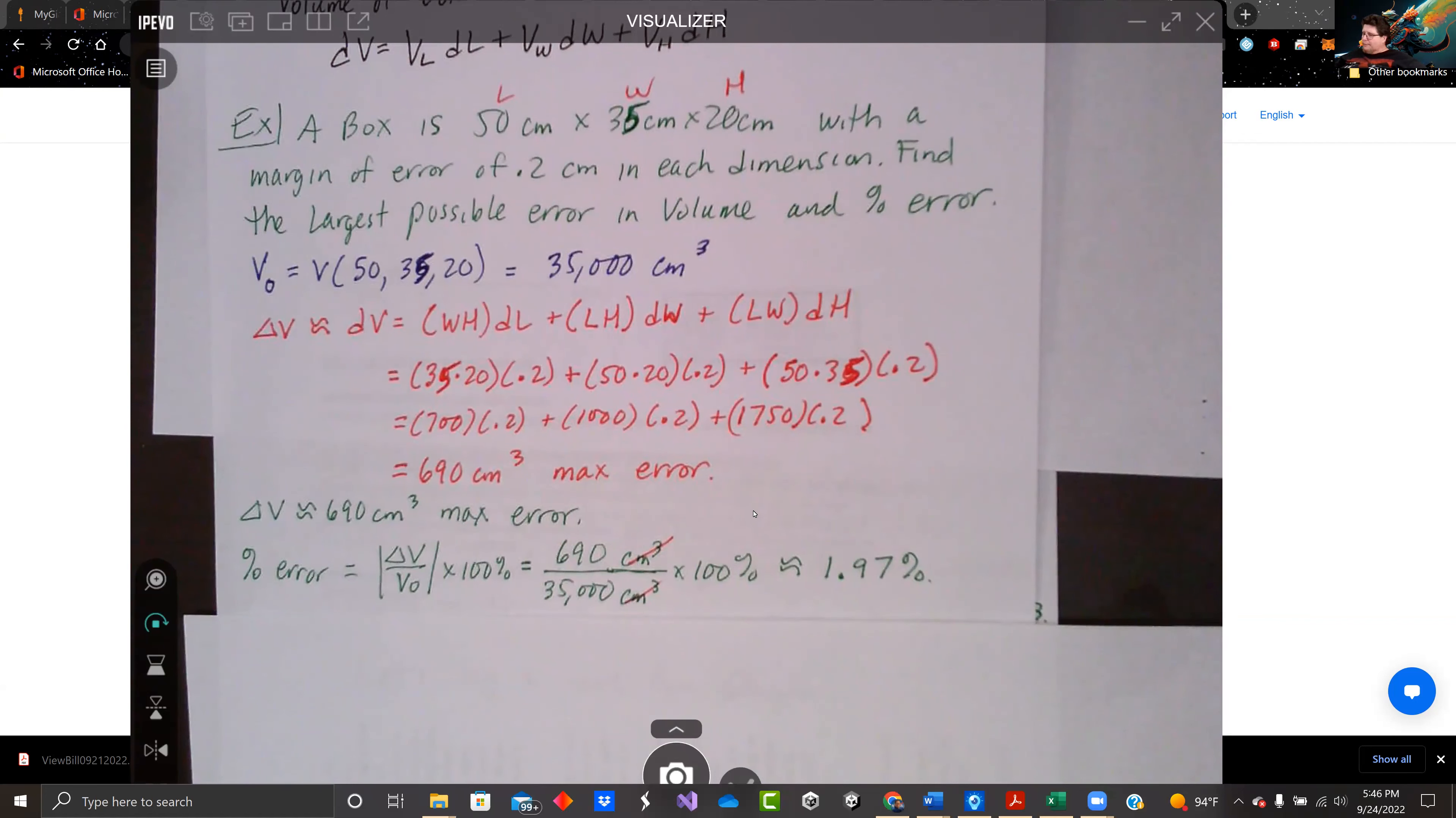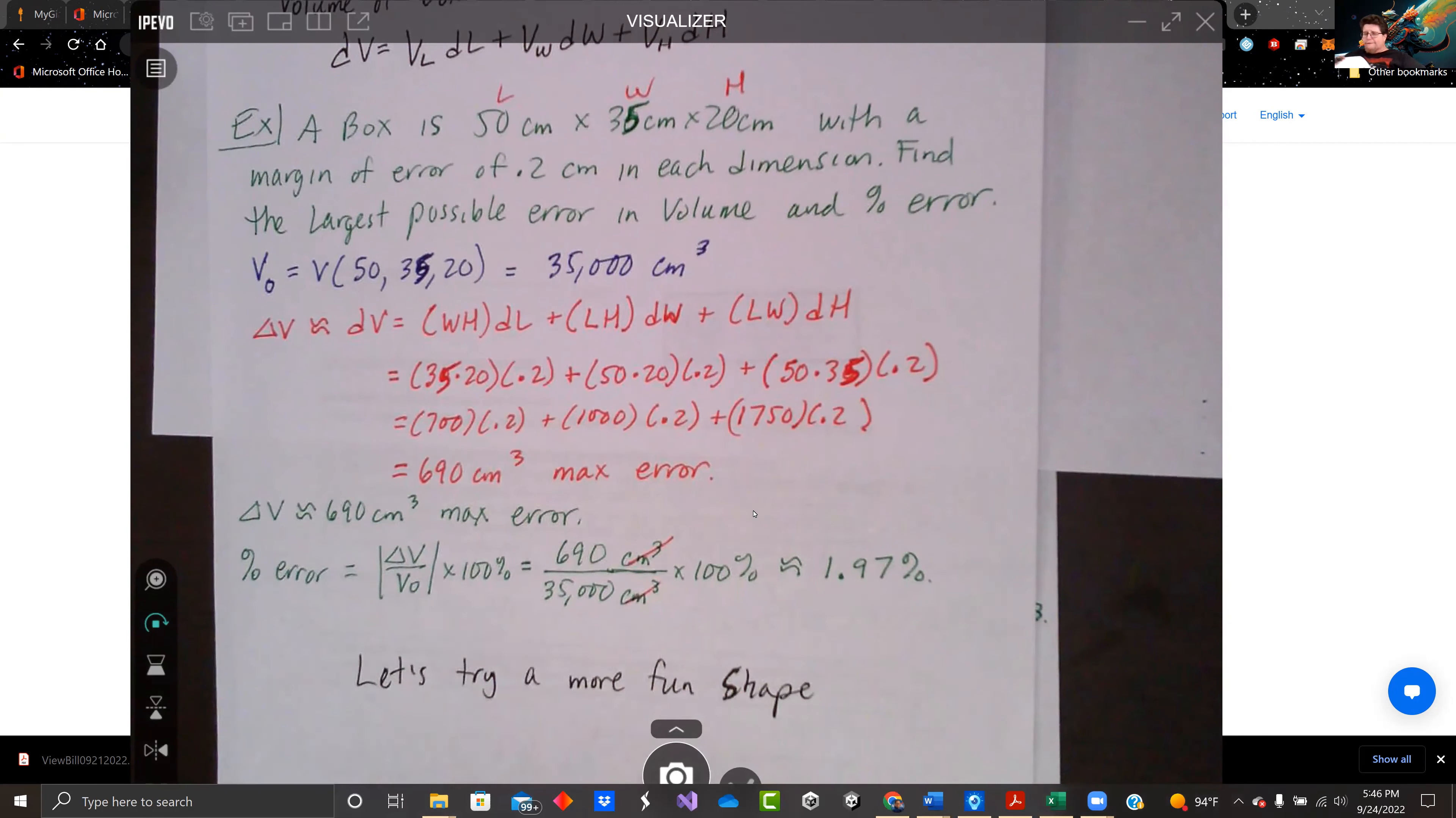Notice the centimeters cubed drop out. We get 1.97 percent, under two percent margin error for the volume. I don't know if we like that or not as the box company. Let's try a more fun shape.